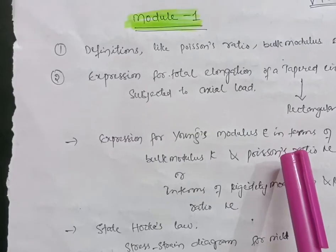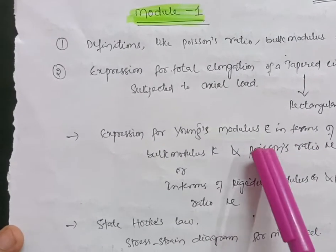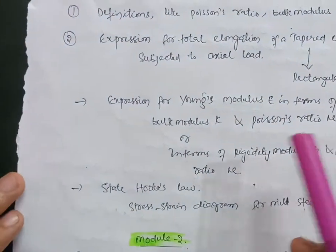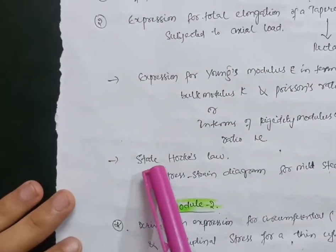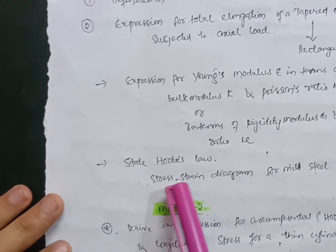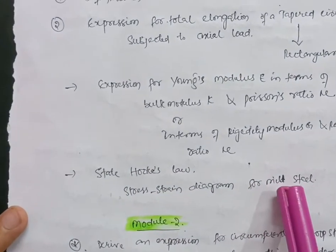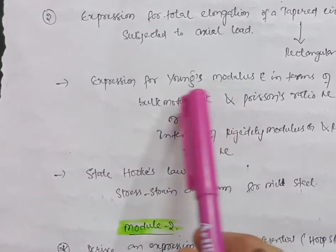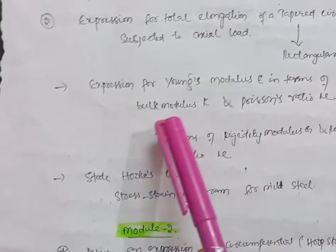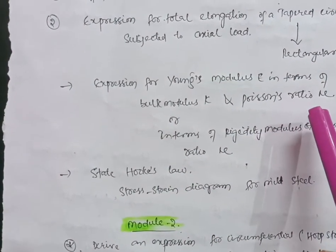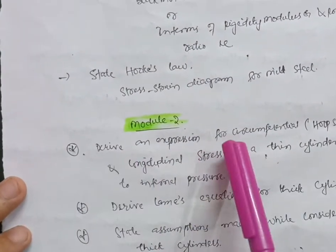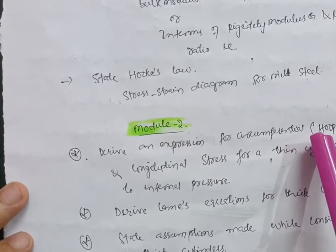Another derivation is the expression for Young's modulus in terms of Rigidity modulus and Poisson's ratio. These two derivations are definite questions in Module 1 — go through whichever is convenient. Also, state Hooke's Law and cover the stress-strain diagram for mild steel, as there are high chances those will appear. Problems on Young's modulus in terms of Bulk modulus and Poisson's ratio are also relatively straightforward.